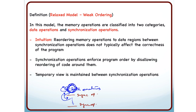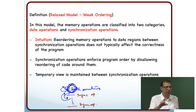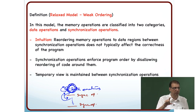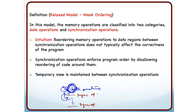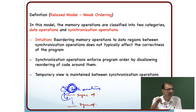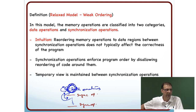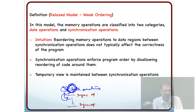Synchronization operations enforce program order by disallowing reordering of code around them. Essentially, a temporary view is maintained between synchronization operations — a particular processor may have a view of memory that is not the same as any other processor's view. For example, a local value in a register may not be visible to other processors, making it a temporary view.